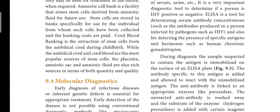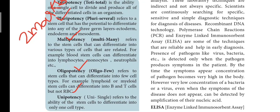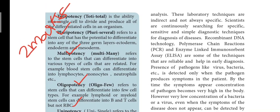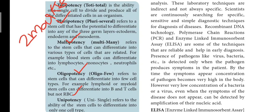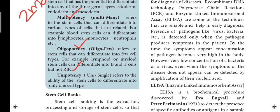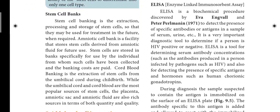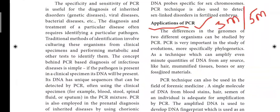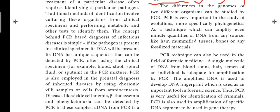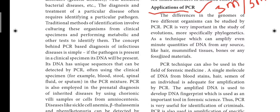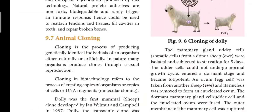Page number 153 has a box listing: totipotency, pluripotency, multipotency, oligopotency, and unipotency — these are two-mark questions. Totipotency is the ability of a single cell to divide; pluripotency means several forms; multipotency means many forms; oligopotency means few forms; unipotency means one form. Moving on to page number 155, applications of PCR is an important two-paragraph section — sometimes it's a three-mark, sometimes a five-mark question.